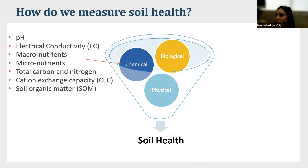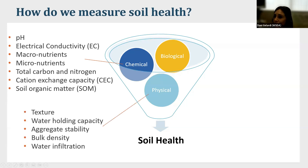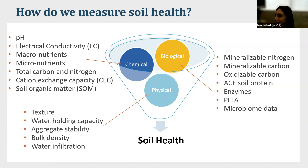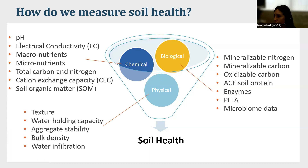We think about soil health indicators in three different buckets: chemical, biological, and physical. Chemical indicators include electrical conductivity, pH, and macro and micronutrients. Physical measurements include texture, water holding capacity, and bulk density. Then there are microbial metrics: mineralizable nitrogen, carbon, oxidizable carbon, protein, enzymes, phospholipid fatty acids, and microbiome data. The list gets really, really long and can sometimes feel a little overwhelming.